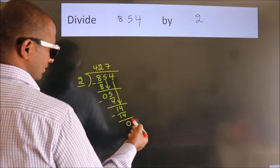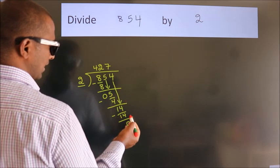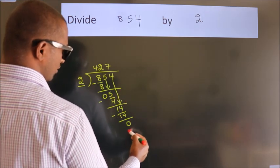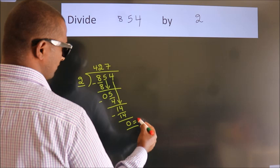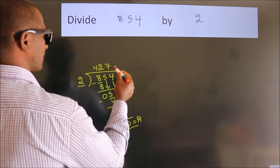After this, no more numbers to bring down. So we stop here. This is our remainder. This is our quotient.